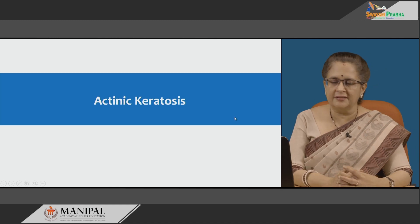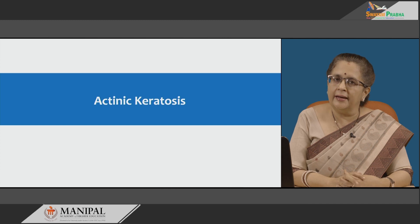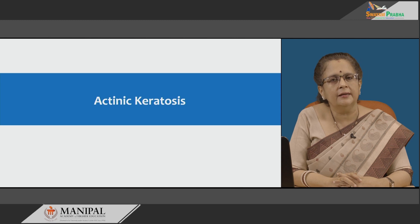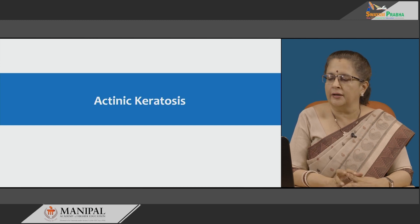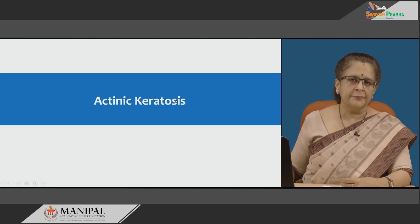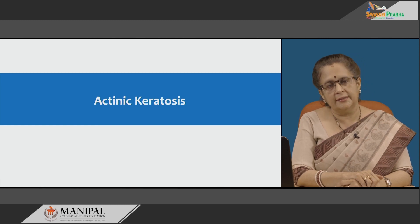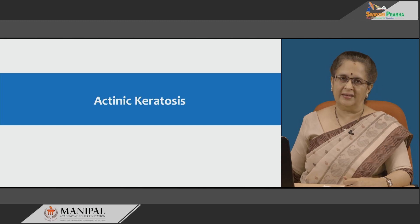The first condition we will examine is actinic keratosis. 'Actinic' as the name suggests refers to damage from radiant energy of the sun, specifically ultraviolet rays. 'Keratosis' means an increased layer of stratum corneum. So keratinization is more pronounced in these cases. This is damage to skin due to UV rays, especially in exposed parts, seen morphologically as multiple layers of keratin or thickened keratin.